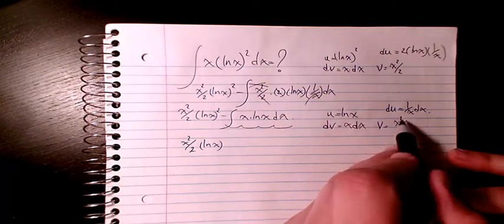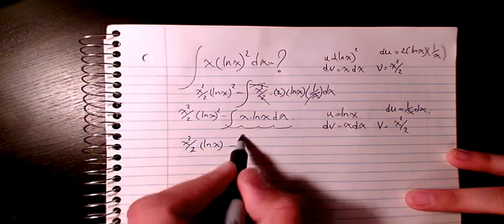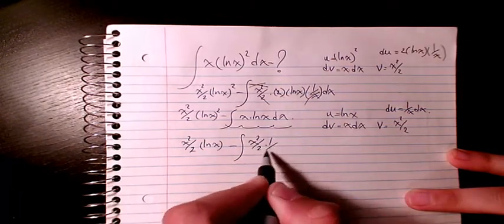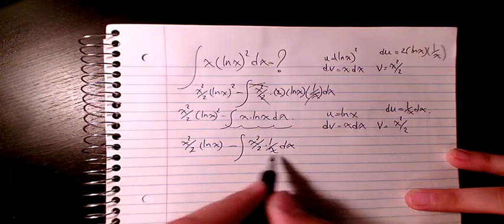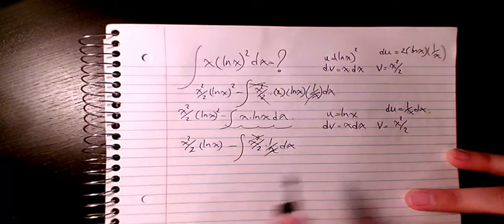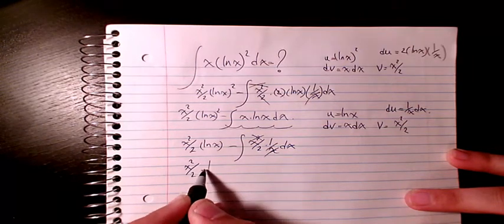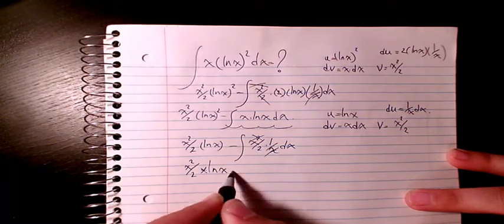This x and square cancel out, and it's going to be x squared divided by 2 times ln x, minus v du, x squared divided by 2, 1 over x dx. This x and square cancel out, and it's going to be x squared divided by 2 times ln x minus